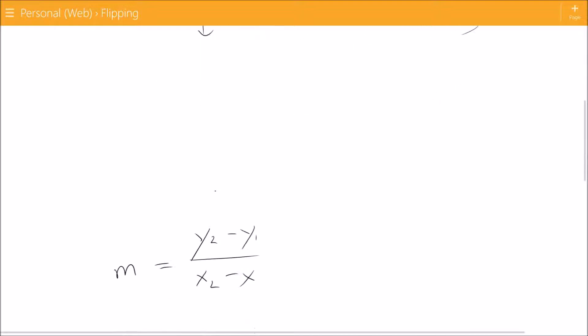So the formula for that is the midpoint formula and that is simply m, this is your slope, is equal to y2 minus y1 over x2 minus x1.